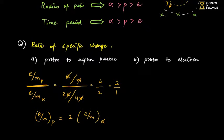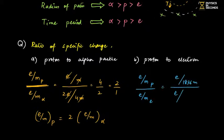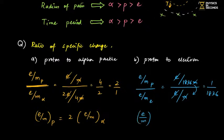For proton to electron: (e/m)_proton / (e/m)_electron. Both have the same charge e, but proton mass = 1836 × electron mass. After cancellation the result is 1/1836, meaning the electron's Charge to Mass Ratio is 1836 times greater than that of the proton.